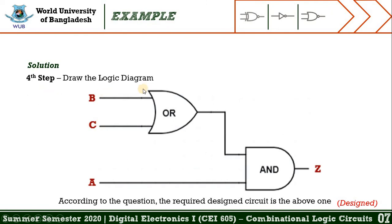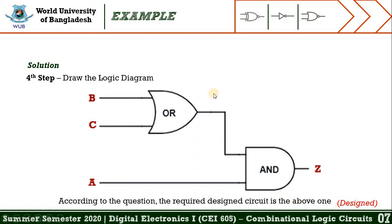The fourth step is to implement the Boolean expression using logic gates. For this problem we need an OR gate and an AND gate. The inputs to the OR gate are B and C. One input to the AND gate is the output of the OR gate, and the other input is A. The final output is Z, which is the required designed circuit.